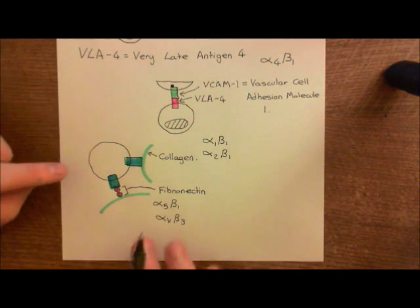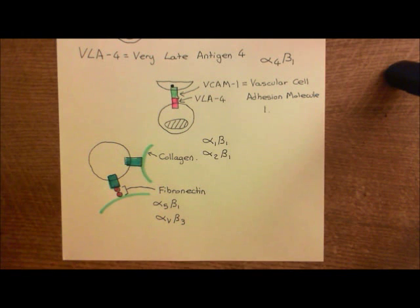Those are four examples of integrins which can link to the extracellular matrix, and these sort of connections are involved in holding a cell at its site, basically, and stopping it moving. It keeps it nice and held to the extracellular matrix.